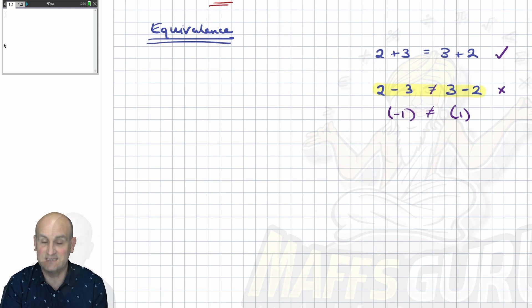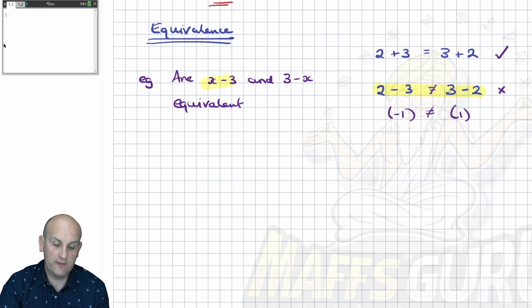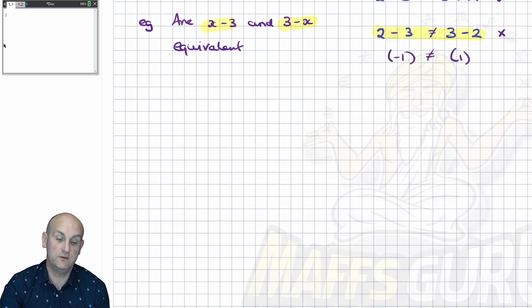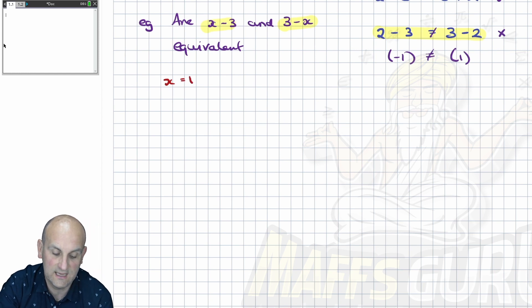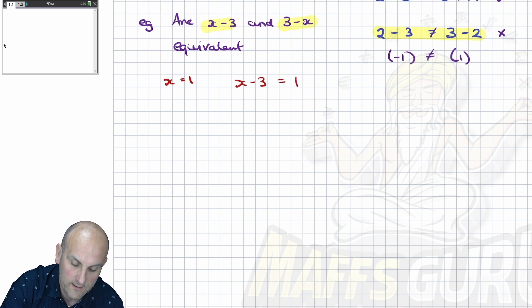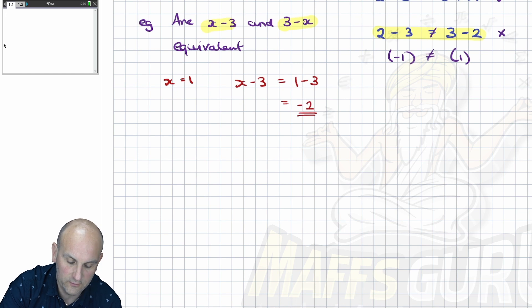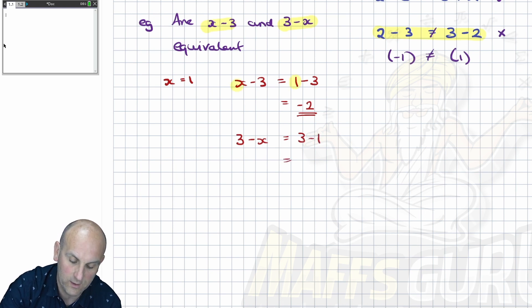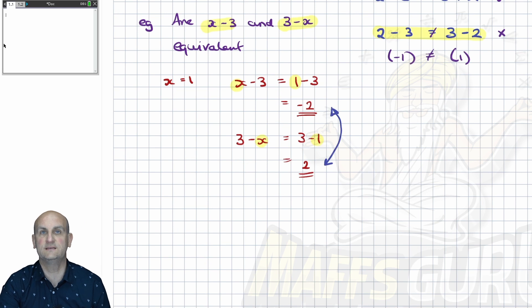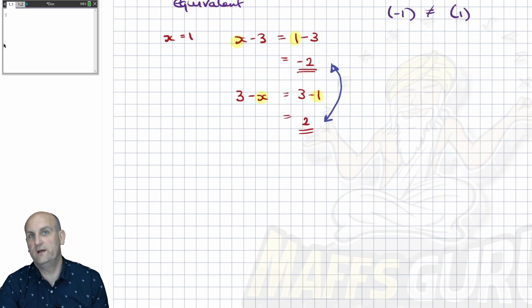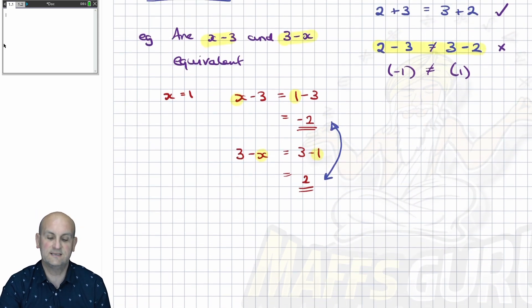Here's a question: are x minus 3 and 3 minus x equivalent? Well, we've just been dealing with substitution, so I'm going to substitute a value for x. Choose x equals 1. Then x minus 3 becomes 1 minus 3, which is negative 2. And 3 minus x becomes 3 minus 1, which is 2. Are they the same? No — so they are not equivalent. It's got to be true for all values of x. Testing equivalence means you just choose a number and see if they're true.